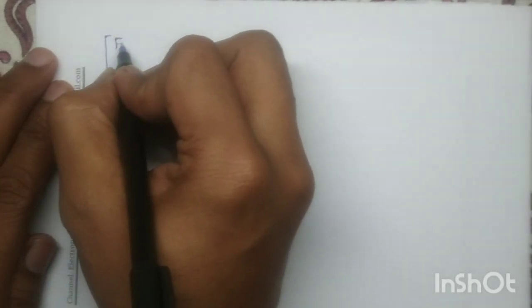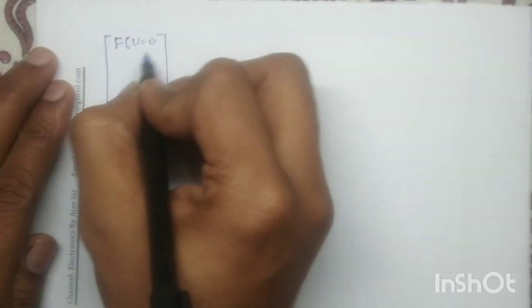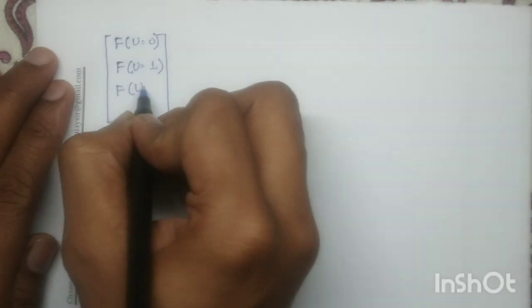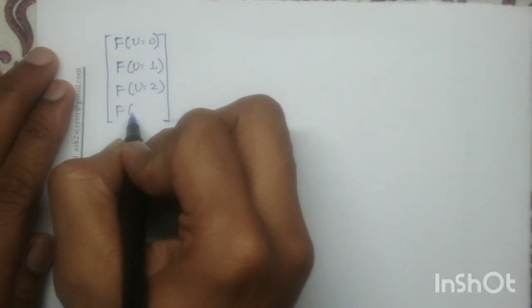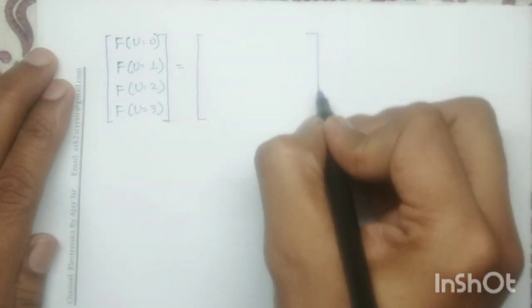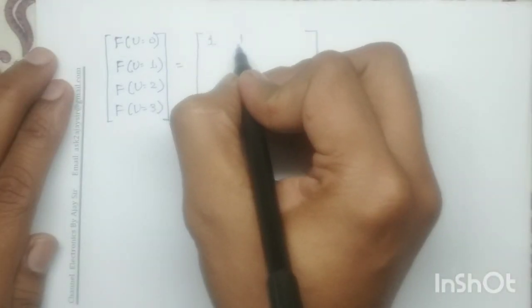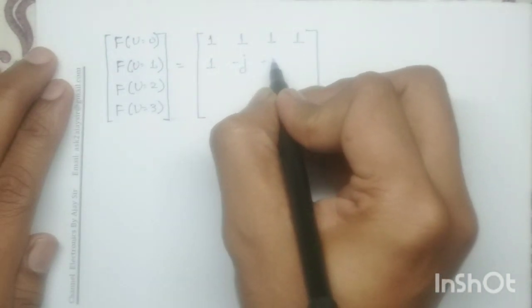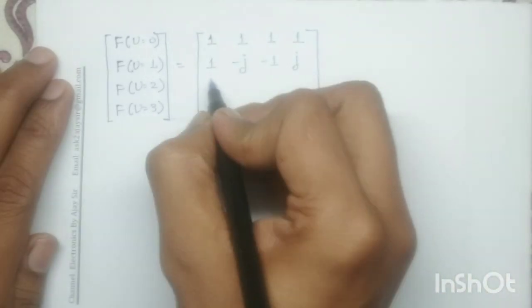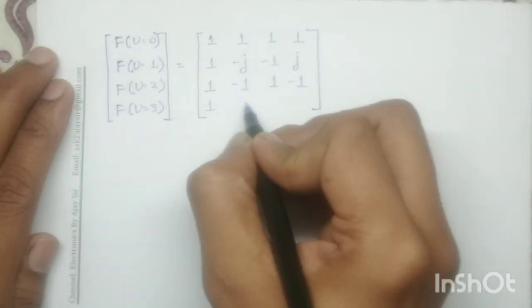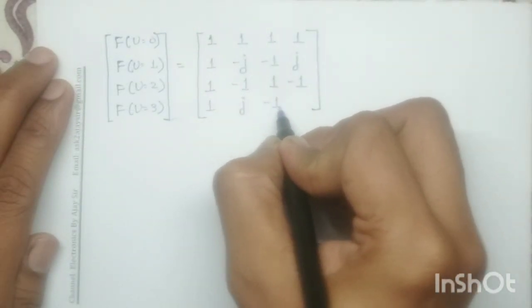Let us apply the twiddle matrix. On the left-hand side we write F(u=0), F(u=1), F(u=2), and F(u=3). On the right side, the twiddle matrix is: row 1: 1, 1, 1, 1; row 2: 1, -j, -1, j; row 3: 1, -1, 1, -1; row 4: 1, j, -1, -j.